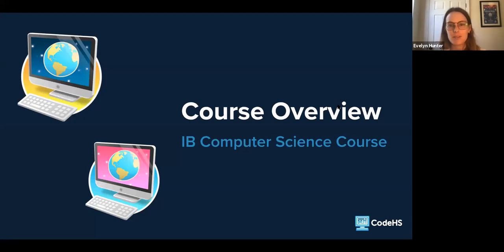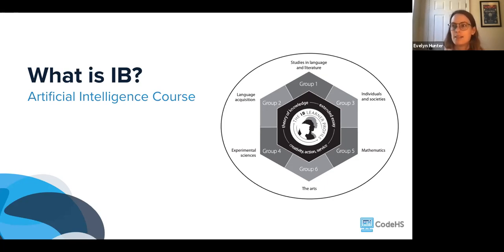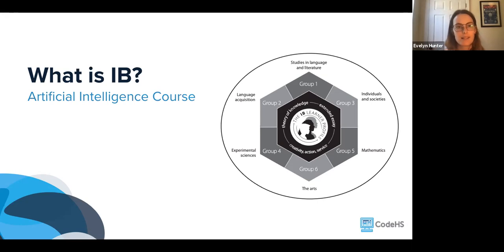First, we'll give an overview of the IB courses. The IB Diploma Program is a course of study designed for students 16 to 19 — older high school students — and it is presented as six academic areas. The six groups all enclose around the central core, which is the theory of knowledge. Students study from each of these groups. What we're talking about is group four, which is where computer science falls — part of the experimental sciences.